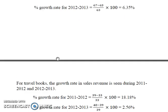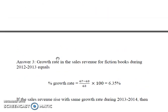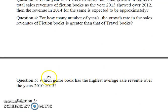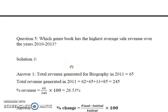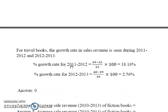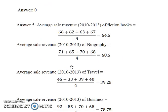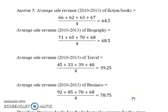In the last part of this example, we are asked to find which genre of book has the highest average sales revenue over the given years. This is a very simple one. For each genre, calculate the average of the sales revenue generated during 2010-2013 and then simply compare among themselves. We find that business books has the highest average sales revenue over these years.